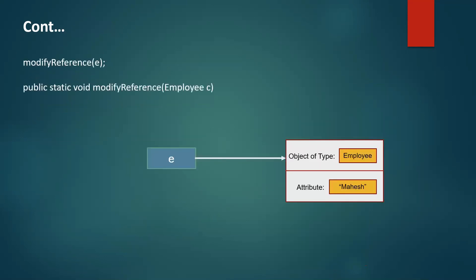For modifyReference — when we call this method, C is an object which has the value of reference of E, so C points to the same object. When we call the modify method using object C, the value gets changed as C is also pointing to the same object E is pointing to. This proves that Java is pass by value and not pass by reference. And when we talk about primitive types passed as arguments to methods, the changes made to the value within the method are not seen in the calling method — that is also pass by value.